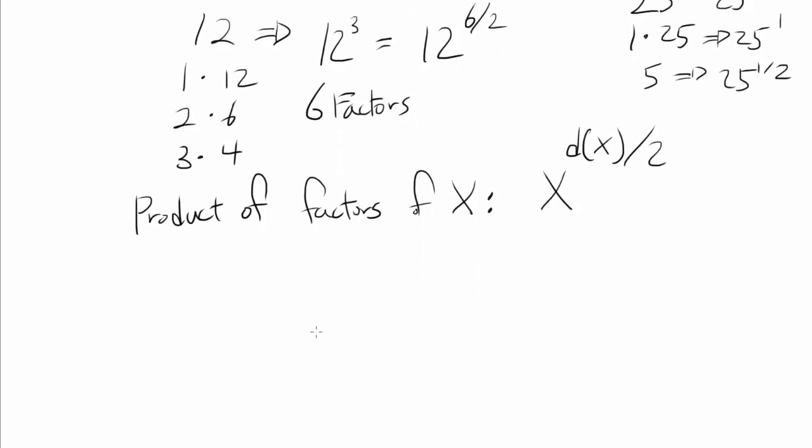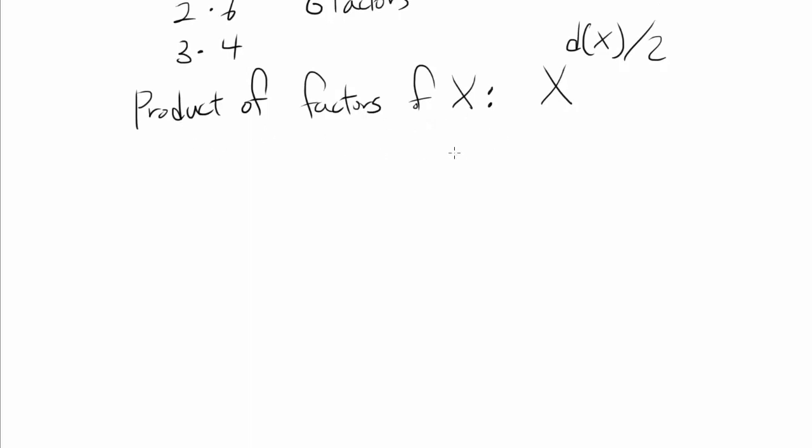So we're going to apply this. So we know, we want to find product of factors of 10 to the nth, so that's going to be 10 to the nth raised to the number of divisors of 10 to the nth. And what is that?